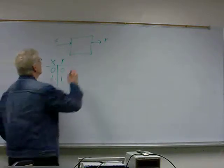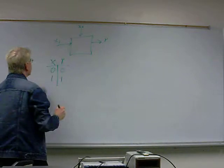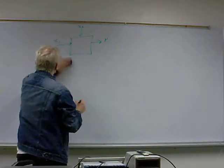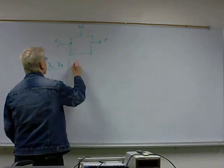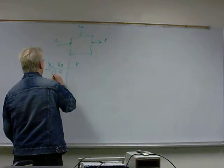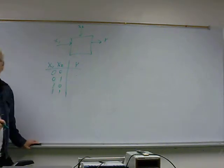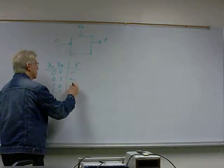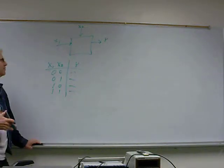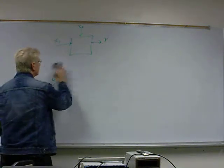If we have two inputs, then we have four combinations of those two inputs, and for each of those we simply list whatever the output value should be, and we've completely described the behavior of this function of two variables.